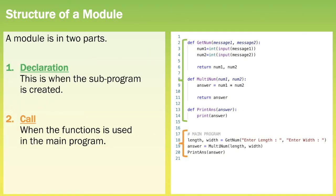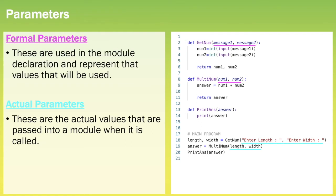Whether a module is a function or a procedure, there are two main parts to both of them: the declaration block and the call statement. The declaration block is when the sub-program is created — in Python we declare modules by defining them using 'def'. We then call that module in the main program, identified by an internal comment. When working with modularity we have parameters — a special kind of variable used by modules to refer to values passed into and out of them. By using parameters we aid modularity.